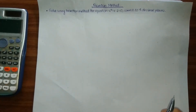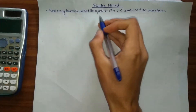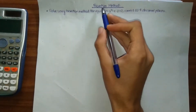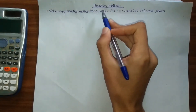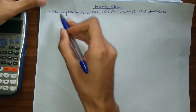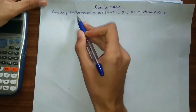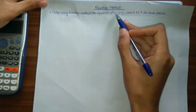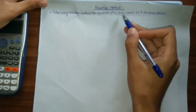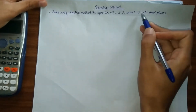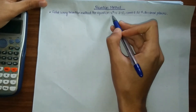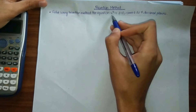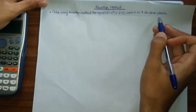Hello online viewers, welcome to our ledger video. In this ledger video we will be solving this equation using the bisection method. The equation reads: solve using bisection method the equation x cubed minus x minus 1 equals zero, correct to 4 decimal places. We simply need to find the root of this equation correct to 4 decimal places.